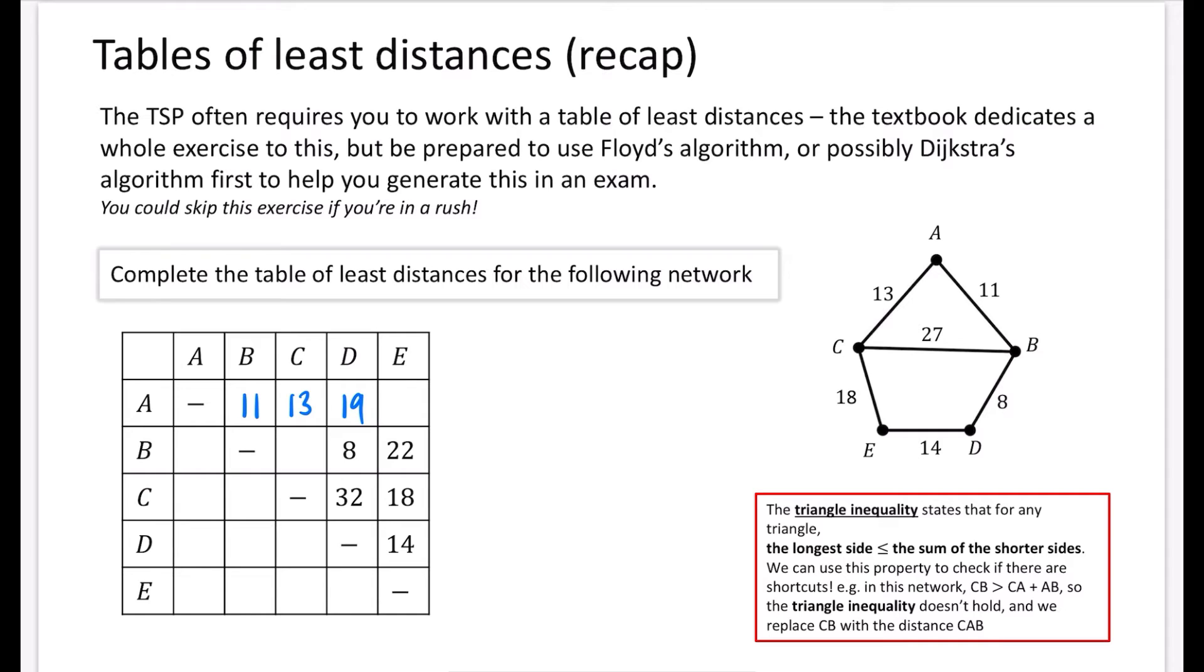And then we start thinking about between A and E. And the shortest distance between A and E, well, we just want to make that choice between here or going all the way around. So 18 plus 13 is 31. And then this is 19 plus 14. Well, that's going to be 33. So we definitely want to go this direction, which is 31.